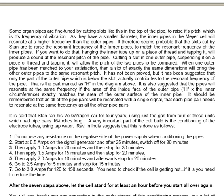A very important part of this cell build is the conditioning of the electrode tubes using tap water. Ravi in India suggests that this is done as follows: 1. Do not use any resistance on the negative side of the power supply when conditioning the pipes. 2. Start at half an amp on the signal generator and after 25 minutes switch off for 30 minutes. 3. Then apply 1 amp for 20 minutes and then stop for 30 minutes. 4. Then apply 2 amps for 10 minutes and afterwards stop for 20 minutes.